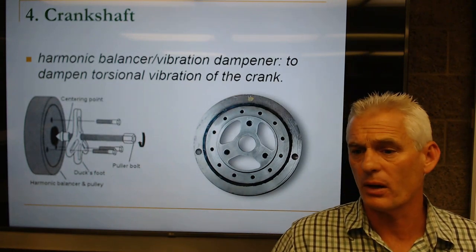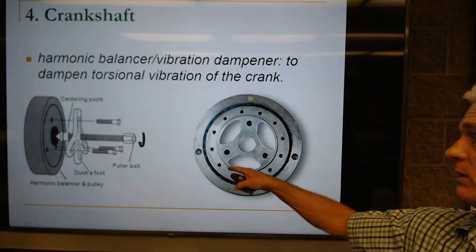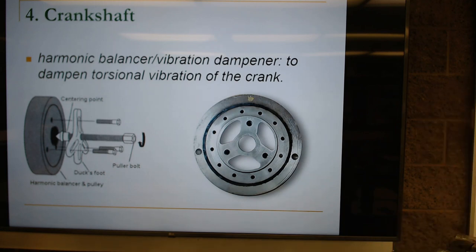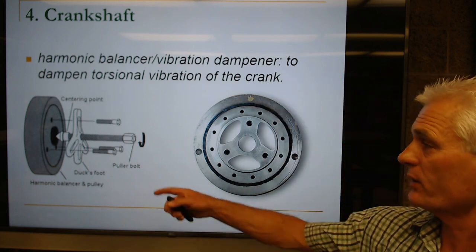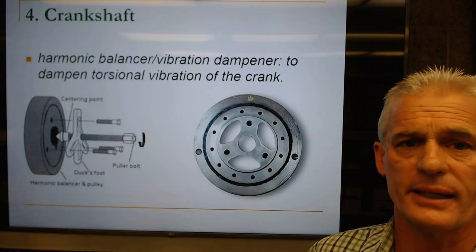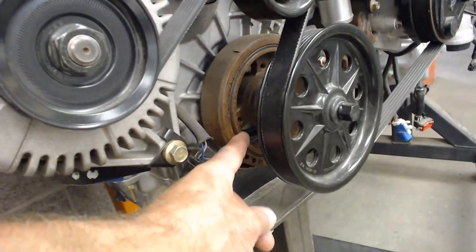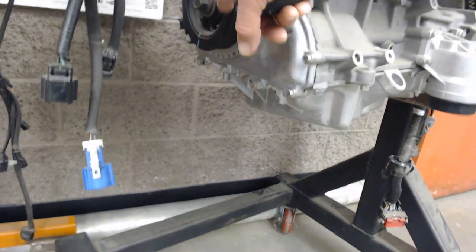On the crankshaft, we always have a harmonic balancer. A harmonic balancer has a steel hub with a rubber insert and then an outer steel hub, dampening what we call harmonic or torsional vibrations. Over here on this engine you can see the accessory pulley, and behind it this rusty one is a harmonic balancer — you can see the rubber insert, making it two-piece. Every engine must have a harmonic balancer.